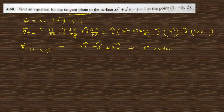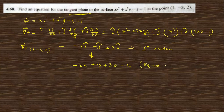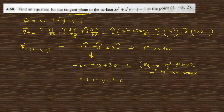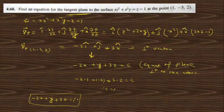The equation of the plane perpendicular to this normal vector is −2x + y + 3z = c. To find c, substitute the point (1, −3, 2): −2(1) + (−3) + 3(2) = −2 − 3 + 6 = 1. Therefore c = 1, and the equation of the tangent plane is −2x + y + 3z = 1.